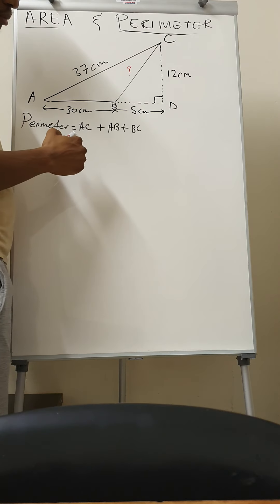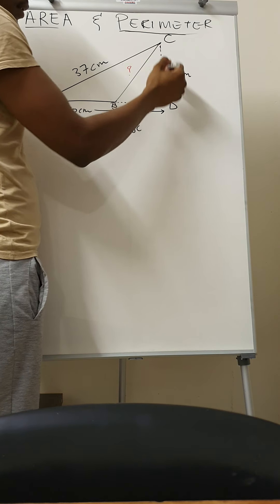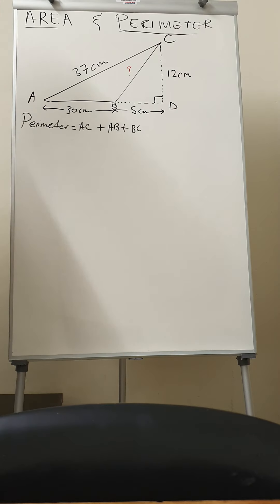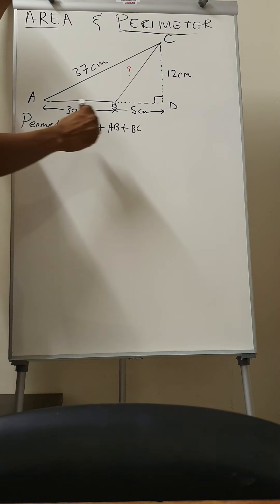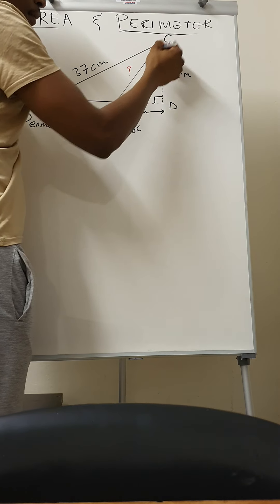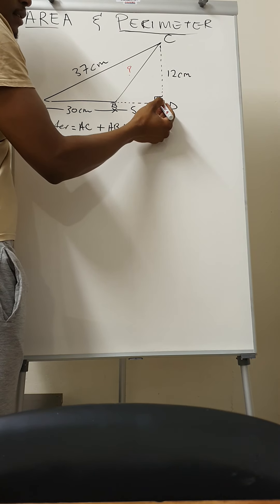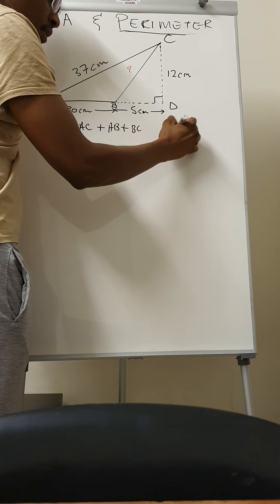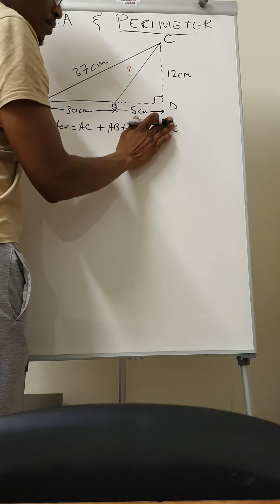So let's find this in. Now BC we can get it using theorem of Pythagoras because you have a right angle triangle here. Now remember, the opposite side of the right angle is called hypotenuse.